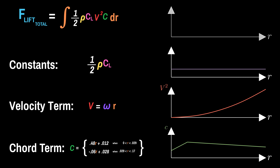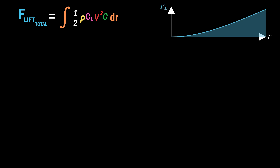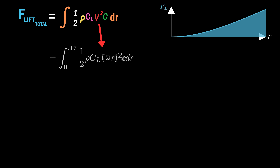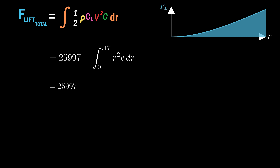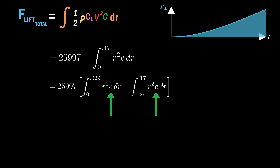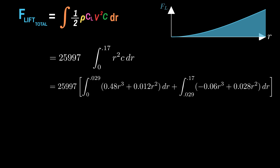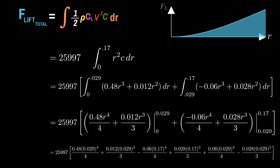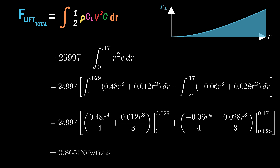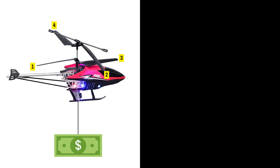Multiplying these terms together graphically shows the lift force as a function of radius. Integrating this function with respect to radius gets the total area under the curve. Plugging in all the constants, splitting the integral into two parts for the piecewise chord function, substituting in the chord lines, simplifying, and performing both integrations — then evaluating and doing the final algebra — gives that the lift force for a single blade is about 0.865 newtons. There are four identical blades on the helicopter, so multiplying by four, the total lift force is about 3.46 newtons.